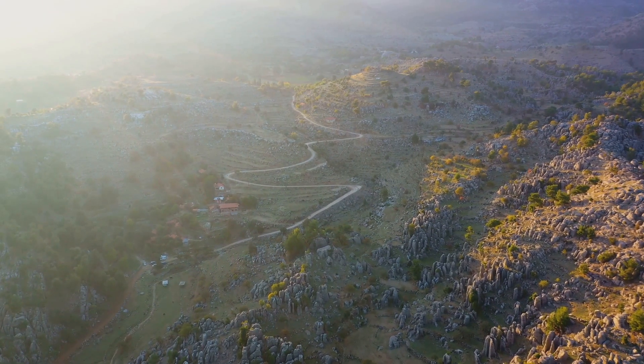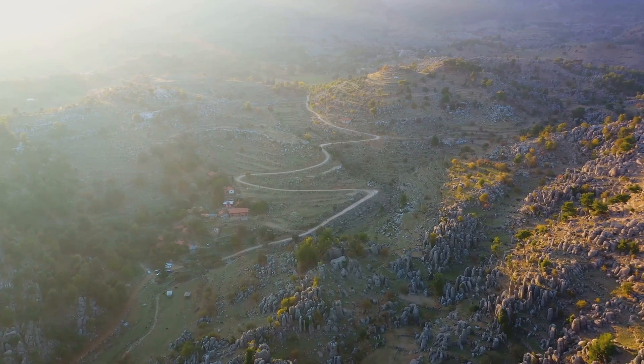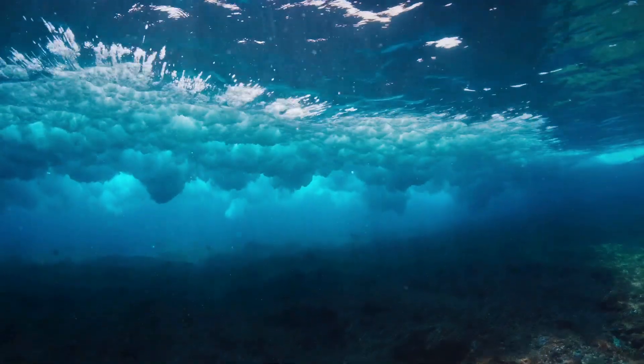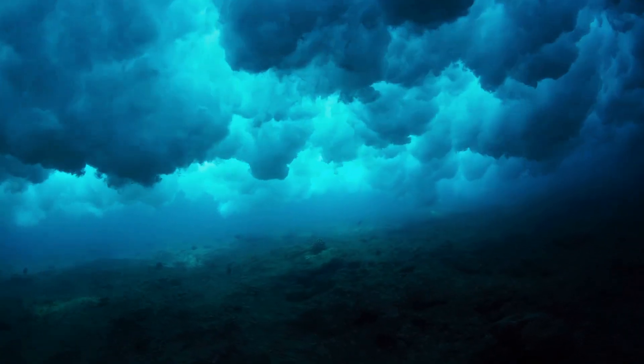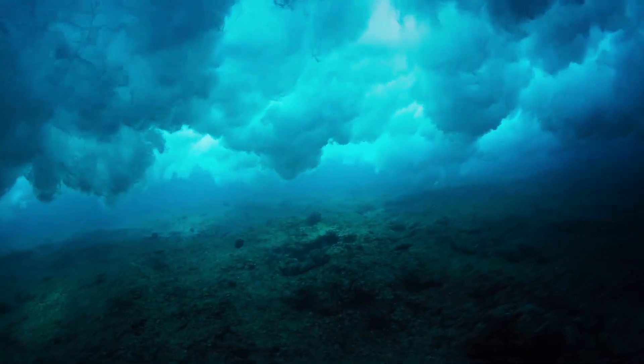As the plates move apart, the land between them sinks, forming a rift valley. Over time, these rift valleys may become ocean basins, a process that has likely been repeated throughout Earth's history.